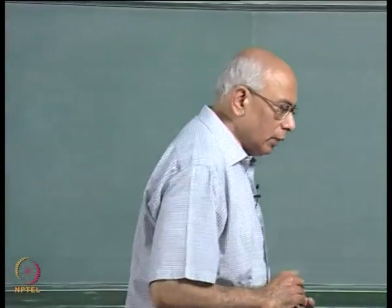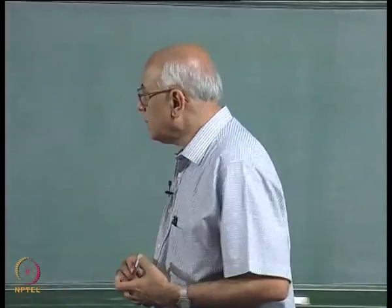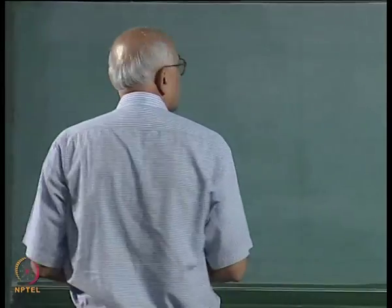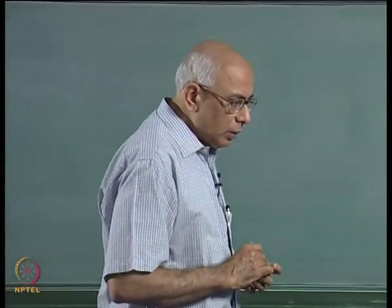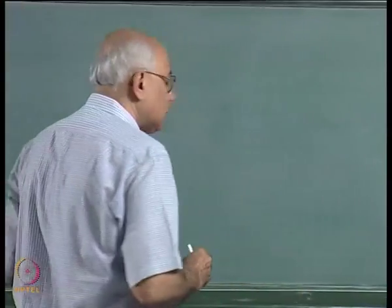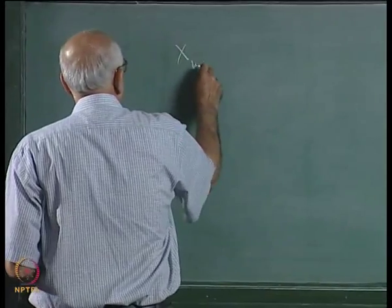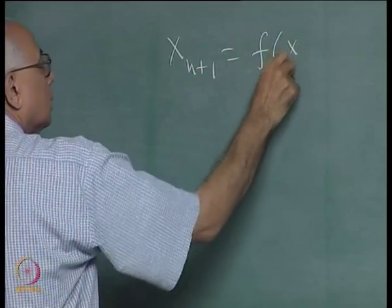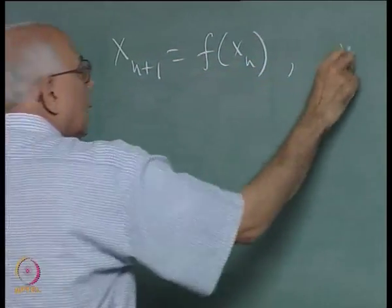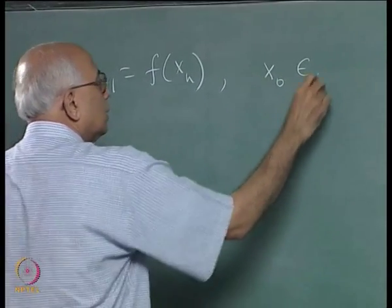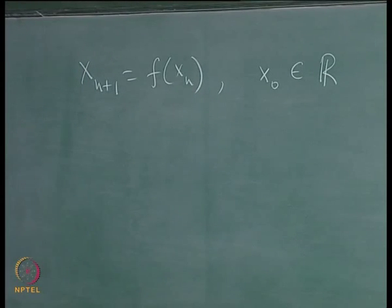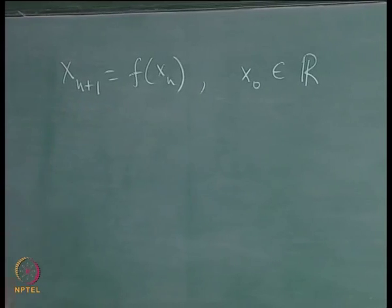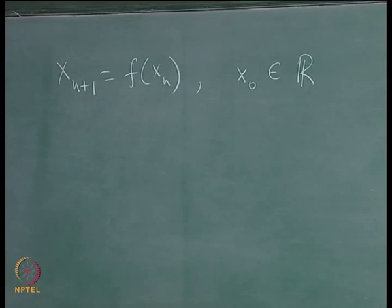We begin by continuing with our study of maps, specifically one-dimensional maps. Recall that the kind of discrete time dynamics we were looking at was a map of the form x_{n+1} = f(x_n), where x_0 is defined to be in some interval — we started off by defining it on the reals — and the question was to study the dynamics implied by this discrete time evolution equation.